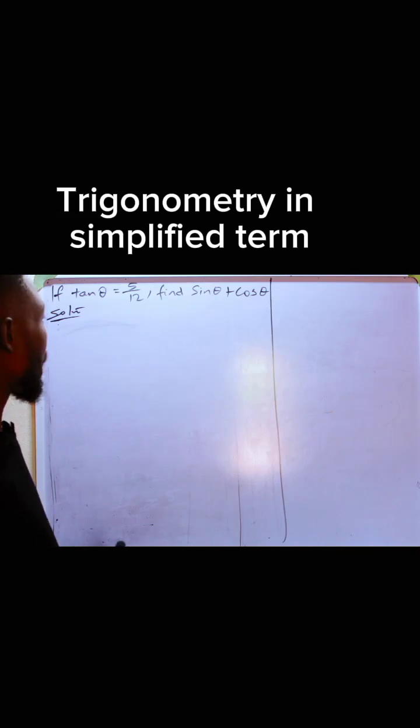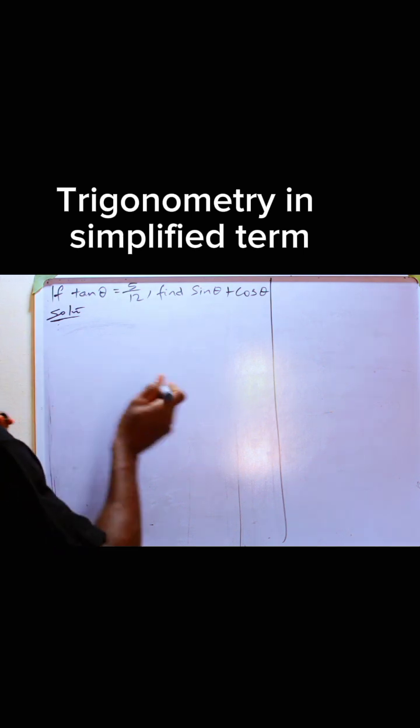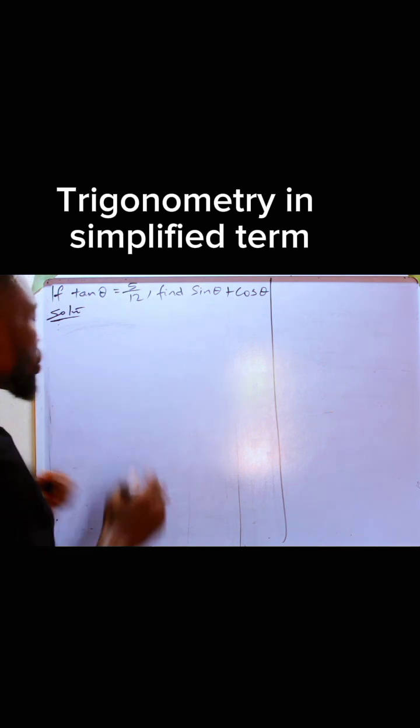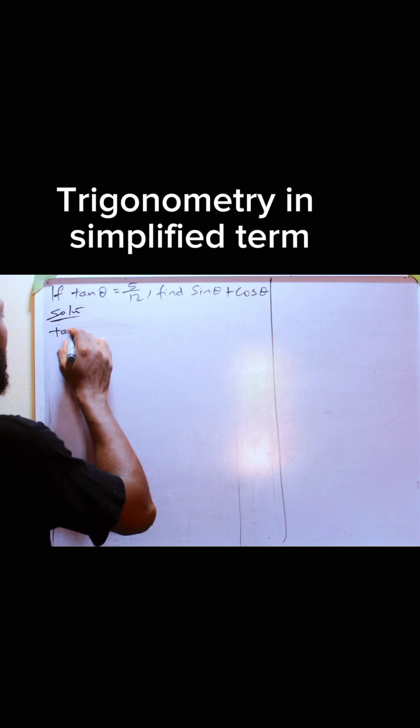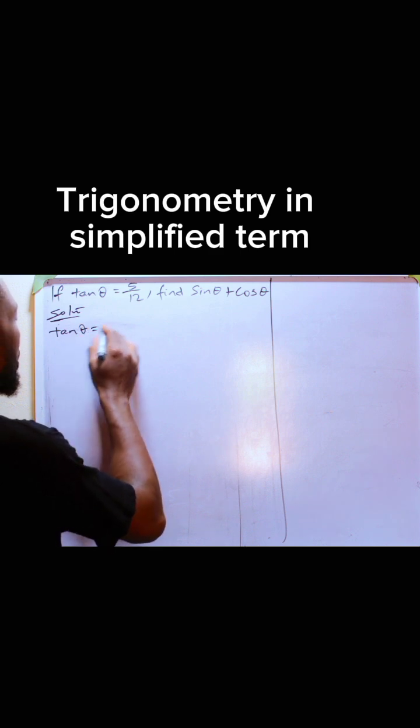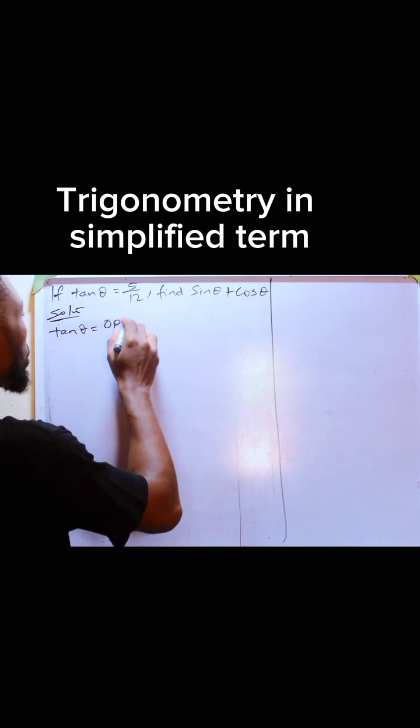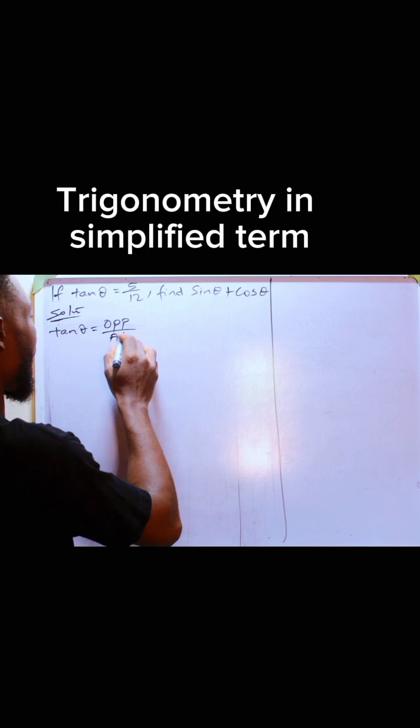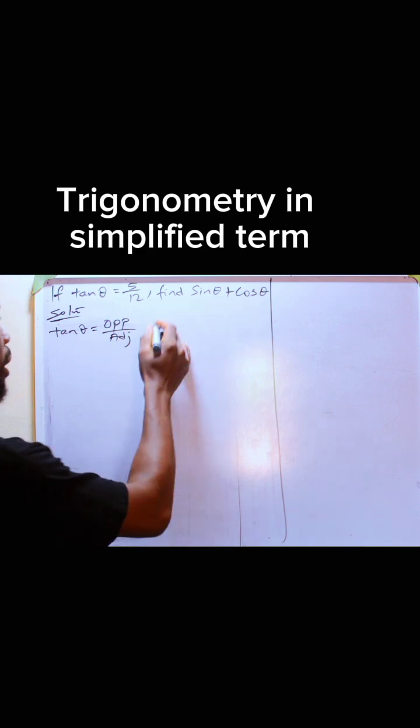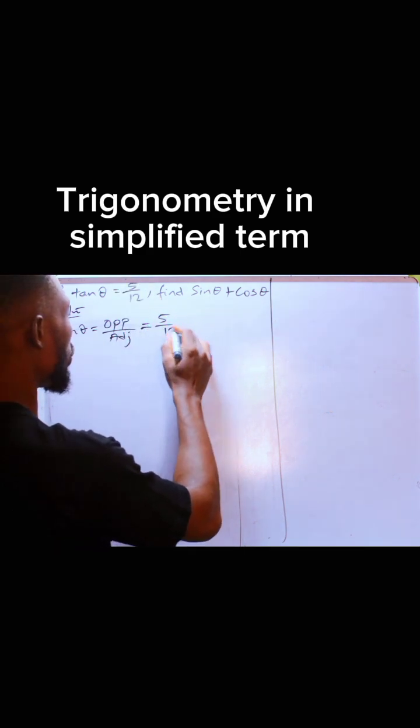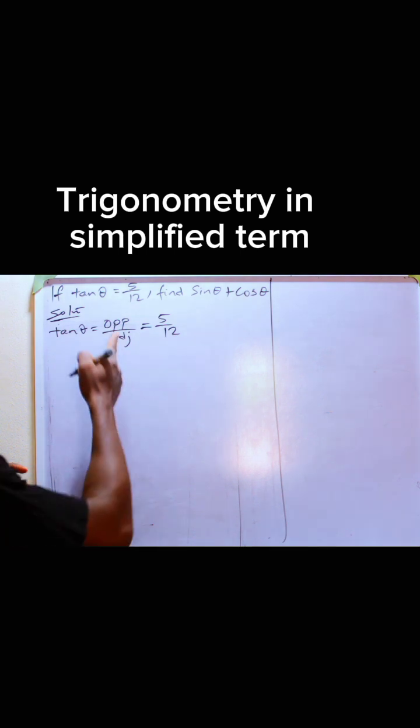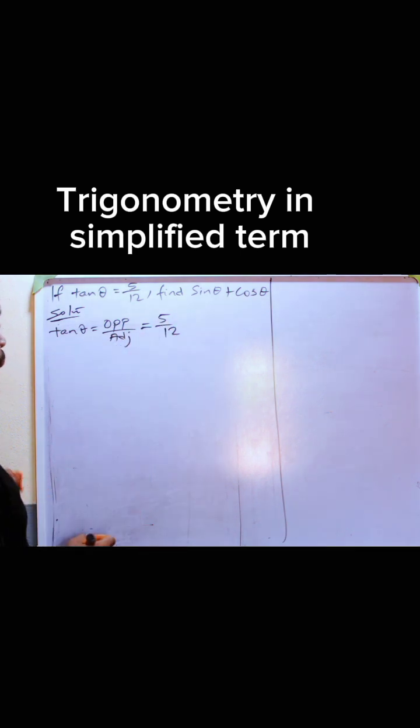Let's quickly look at this problem. If tan θ is 5 over 12, find sin θ plus cos θ. From our knowledge of trigonometry, we know that tan θ is equal to opposite over adjacent. From this we know that it is 5 over 12, which means opposite is 5 and adjacent is 12.